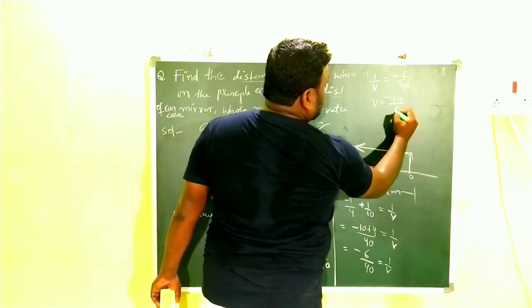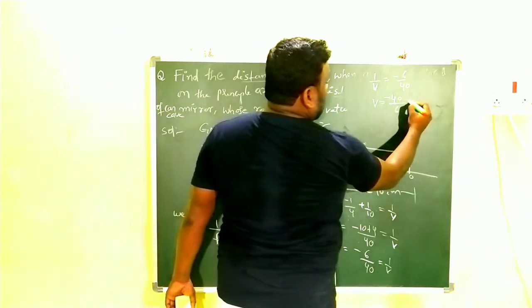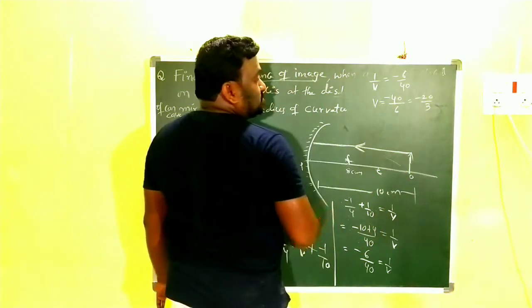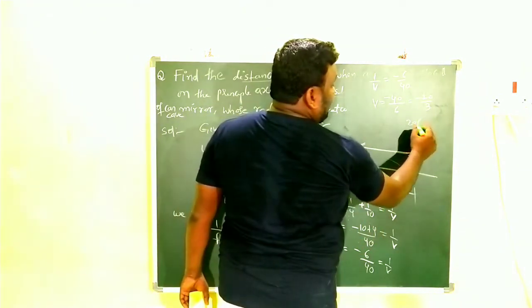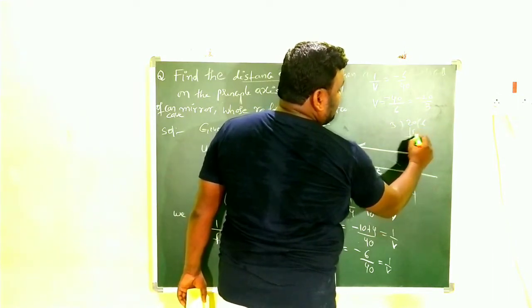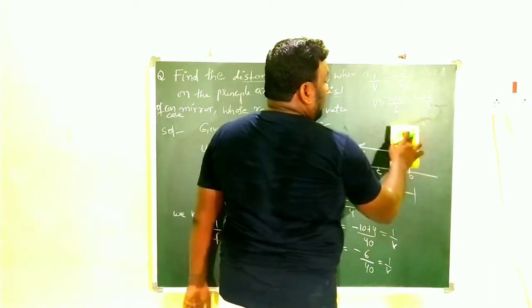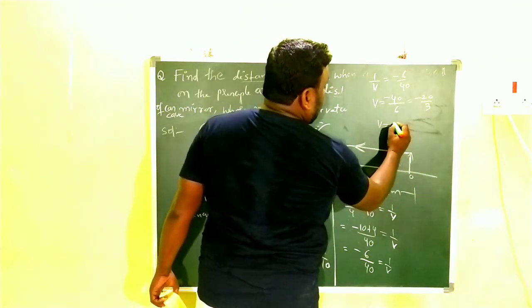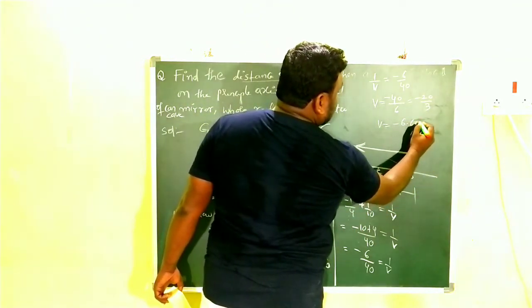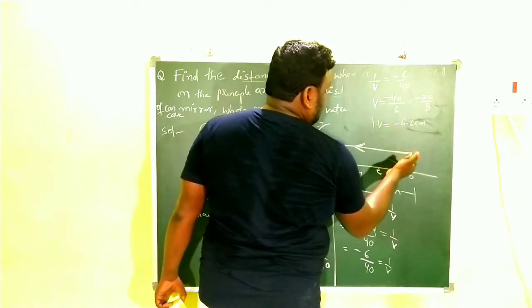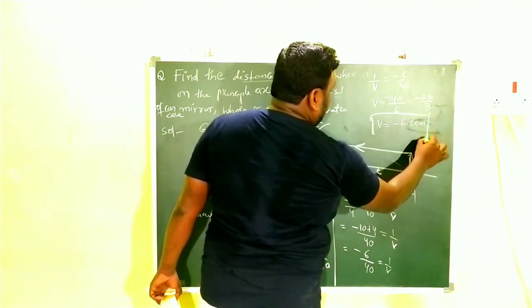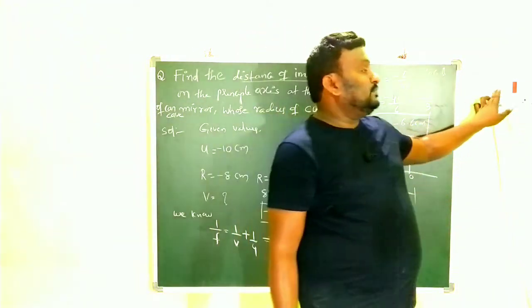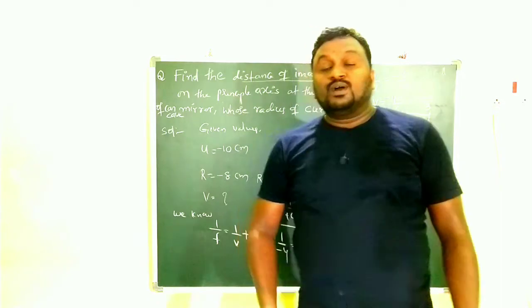So 1/v = −6/40, which gives v = −40/6 = −20/3, which equals approximately −6.6 centimeters. Therefore, v equals minus 6.6 centimeters.